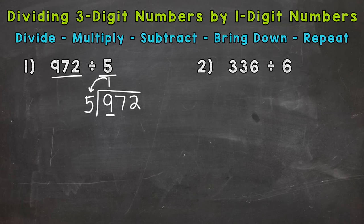Now we multiply. One times 5 is 5. Then subtract. Nine minus 5 is 4. Then we bring down our next digit, that's 7. So we have 47.